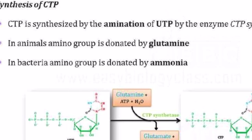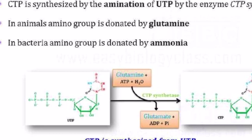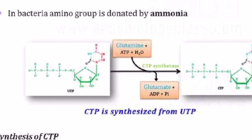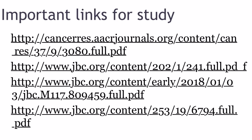Now for CTP synthesis, the enzyme CTP synthase and glutamine are involved, and UTP is converted into CTP. If you look at the structure, in UTP and CTP the phosphate groups and sugars are the same — the difference is in the base. In UTP you have an NH group with a double bond oxygen, while in CTP you have an NH2 group. So UTP is converted into cytidine triphosphate. I hope you have understood. If you have any doubts or queries, comment in the comment section. Thank you so much, stay safe and stay healthy.